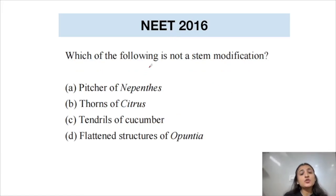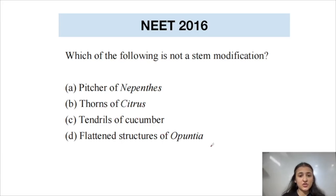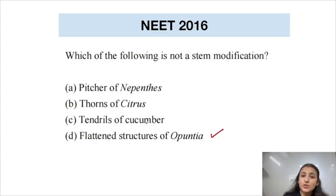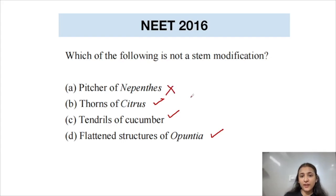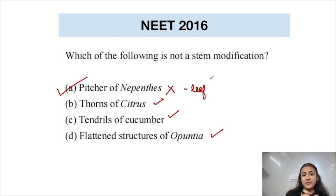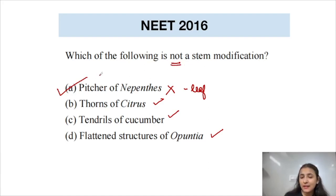From NEET 2016: Which of the following is not a stem modification? The options are pitcher of Nepenthes, thorns of citrus, tendrils of cucumber, or flattened structures of Opuntia. Flattened structures of Opuntia are phylloclades — a stem modification. Tendrils of cucumber and thorns of citrus are also stem modifications. But the pitcher of Nepenthes is a modification of the leaf lamina, not the stem. Correct answer is option A.